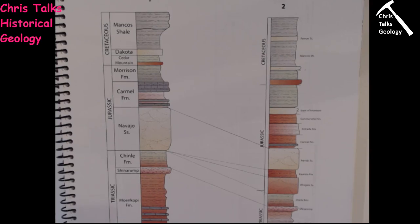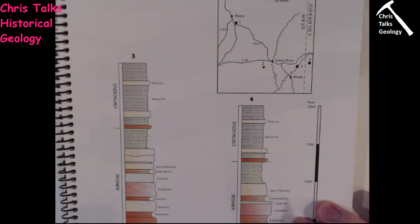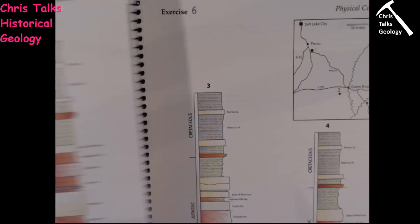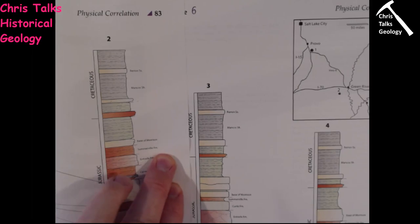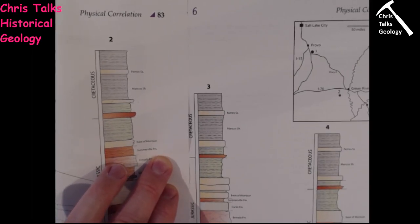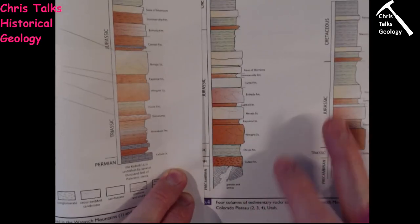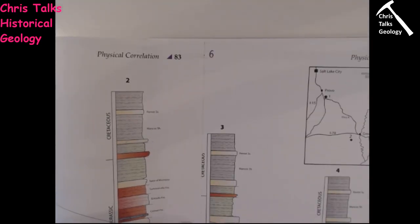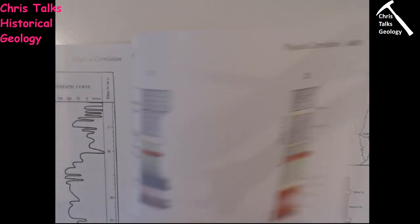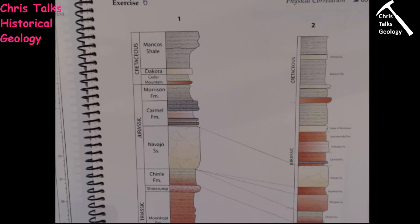If you have a hard copy of the textbook, linking Column 2 to Column 3 is tricky because they're on separate pages. One approach is to hold the two pages side by side, use paper clips at the top and bottom to hold them in place, and then draw the lines of correlation between the layers. Alternatively, you can scan or photograph the pages and put them into a PowerPoint slide and draw the lines there — whatever option works best for you.